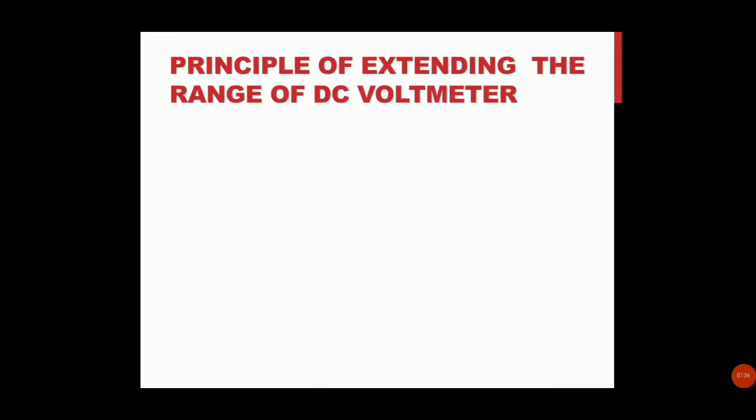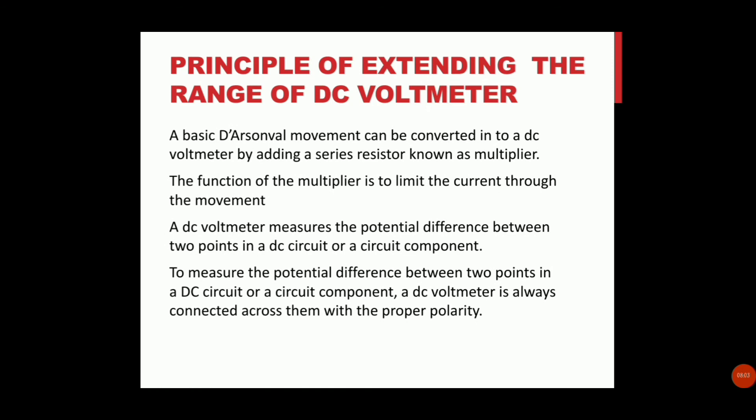This is the principle of extending the range of the DC voltmeter. The basic movement can be converted into a DC voltmeter by adding a series resistor known as a multiplier. The multiplier limits the current through the movement. This DC voltmeter measures the potential difference between two points in a DC circuit and circuit components.